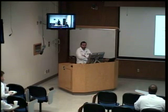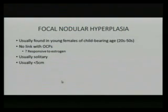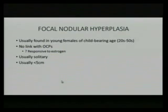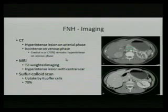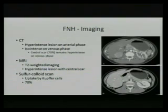Focal Nodular Hyperplasia, or FNH, is again found in young females of childbearing age, 20s to 50s. Cameron states there is no proven link with oral contraceptive pills, though other texts suggest some association. Importantly, FNH is responsive to estrogen — so if someone with FNH starts estrogen or OCPs, the FNH may increase in size. It is usually solitary and less than 5 centimeters.